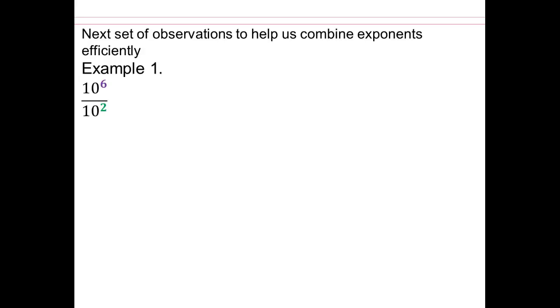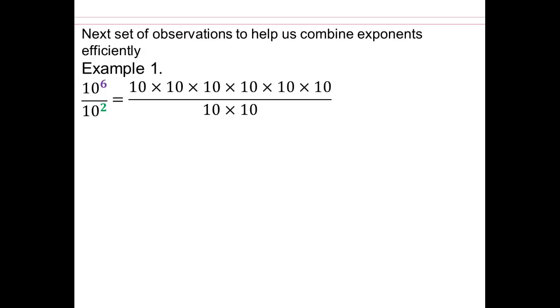In this next lecture, we're going to do more observations on how we can combine stuff. We did our products, so let's do division. Here we have 6 tens on the numerator and 2 tens in the denominator. So we're working with numerator and denominator.